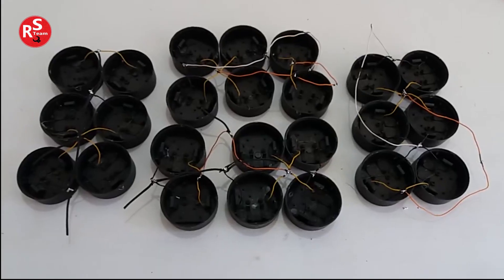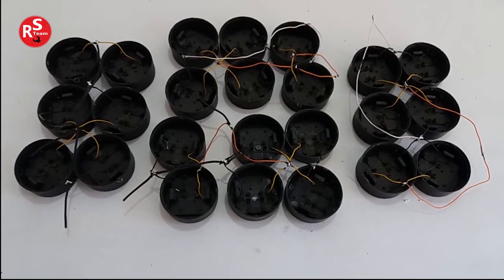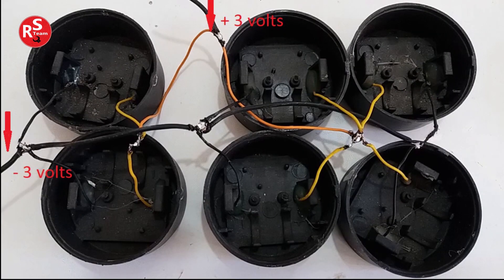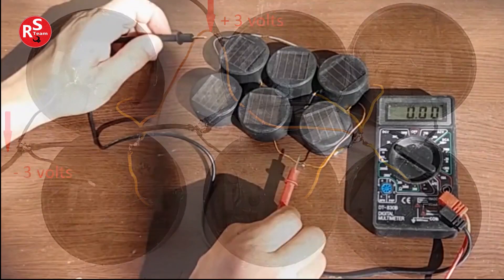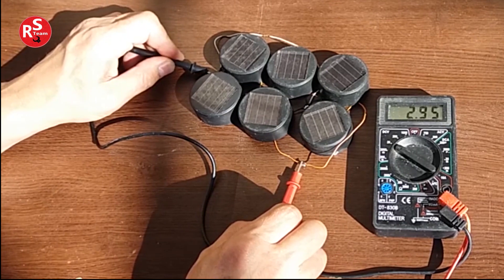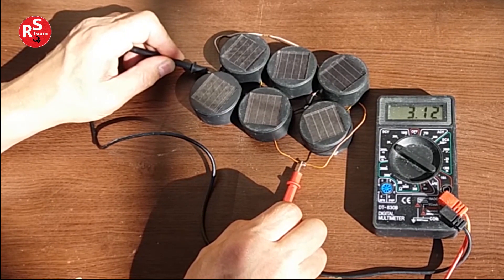In our project, we will use 24 solar cells divided into 4 groups of 6. The 6 elements in each group are connected in parallel with each other. So, the voltage remains 3 volts, but the power is higher.